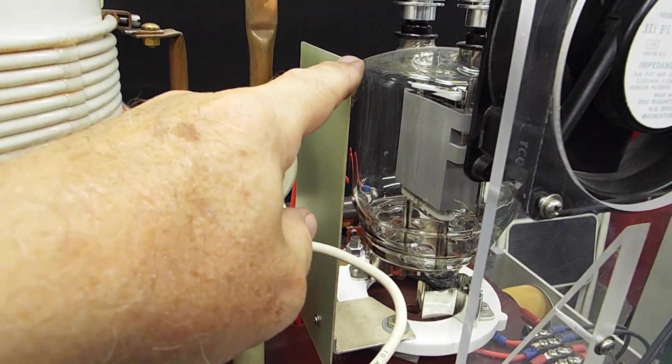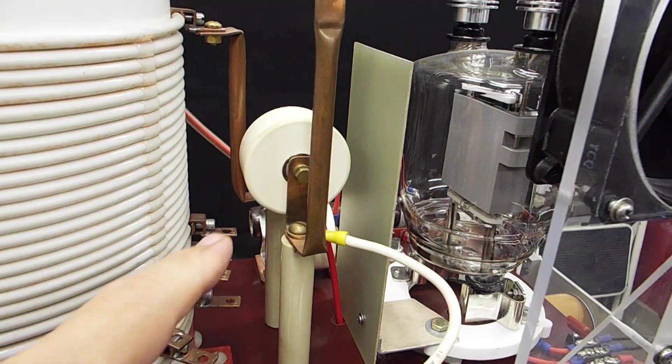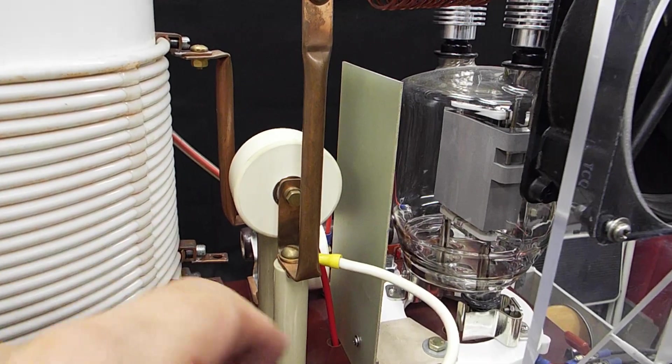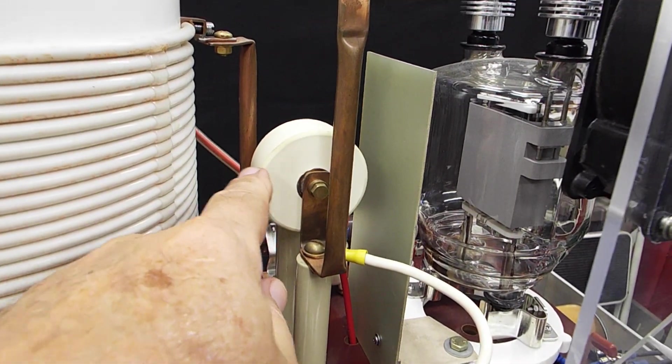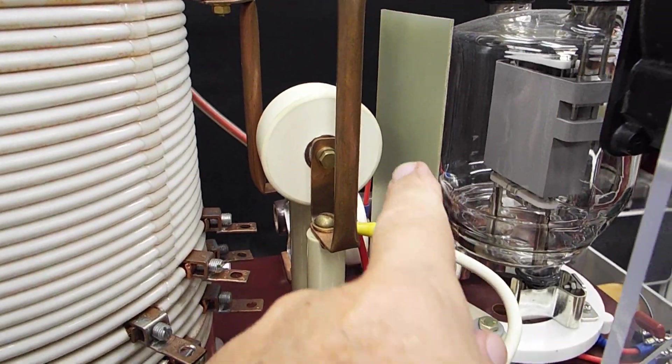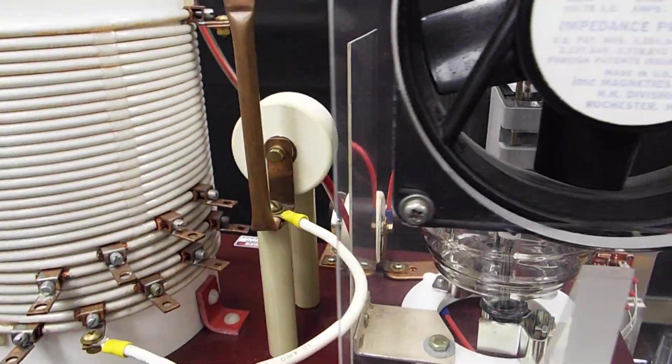This here, this is a radiant heat shield. Doorknob capacitors are affected a little bit by heating, so I shield the doorknob capacitor from the radiant heat from the vacuum tube with this heat shield.